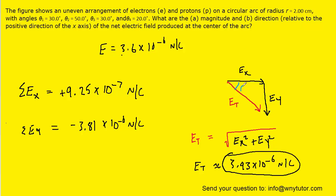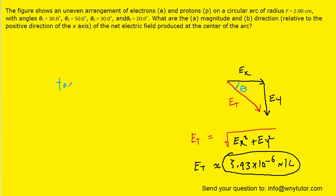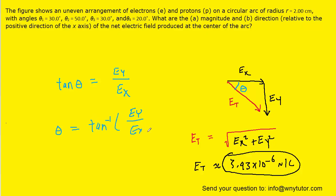The angle can be found using trigonometry. The tangent of the angle equals the opposite side over the adjacent side, so the angle is the inverse tangent of Ey over Ex. Plugging in the values, you should get roughly negative 76.4 degrees. This is the correct answer for the direction relative to the positive x-axis.